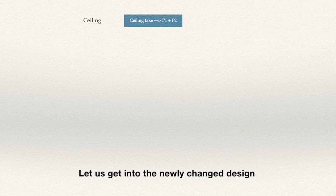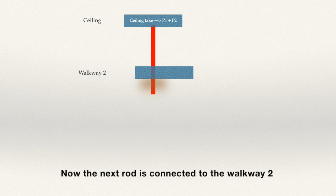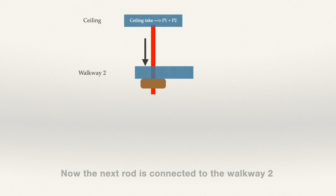Let us get into the newly changed design. The short rod hangs from the ceiling. It holds walkway 2. The nut under walkway 2 supports walkway 2 and the payload of walkway 2 as well. So far so good.